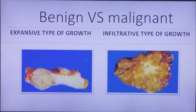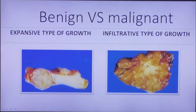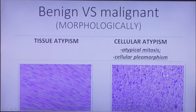First of all, we look at the type of growth. Expansive type of growth is characteristic for benign tumors — they can grow in size by just pushing the borders of surrounding tissues, while malignant tumors grow infiltratively, sprouting through surrounding tissues. That is why the borders of a malignant tumor will not be as regular as in a benign one. But the final verification about the nature of the tumor can be done microscopically.